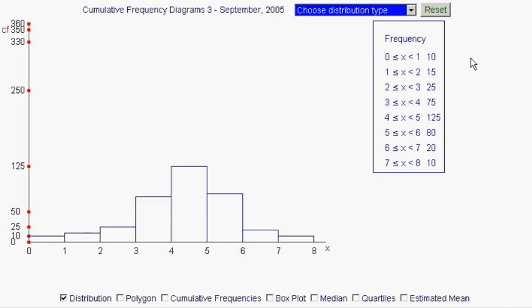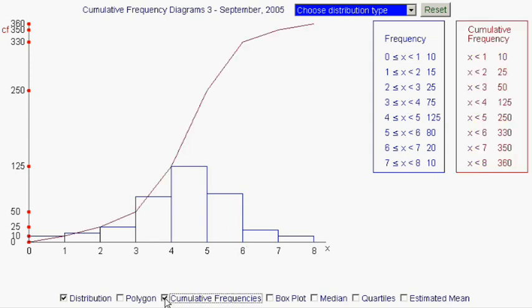In the clip Cumulative Frequency Diagrams 1, we saw how to construct cumulative frequencies and cumulative frequency diagrams from the basic distribution frequencies. Let's just remind ourselves. We add up all these frequencies as we go down the list, and we plot the points on the right hand end of the interval with the frequencies, the cumulative frequencies, giving us this cumulative frequency curve.